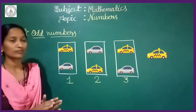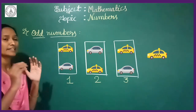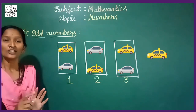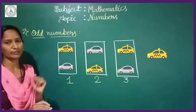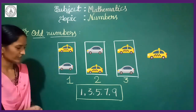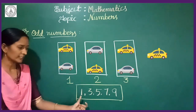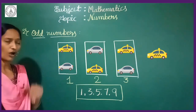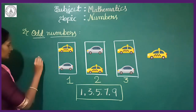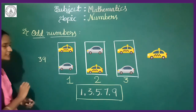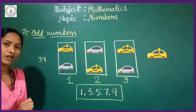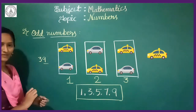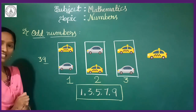This type of number is called an odd number. The numbers that end with 1, 3, 5, 7, and 9 are called odd numbers. Look here: the numbers ending with 1, 3, 5, 7, and 9 are called odd numbers. For example, take 39. Is this even or odd? First, observe the 1's place. Which digit is there in the 1's place?